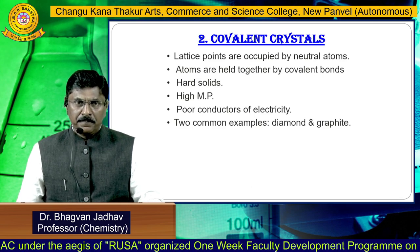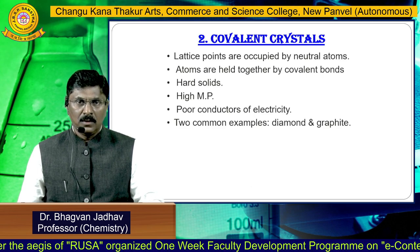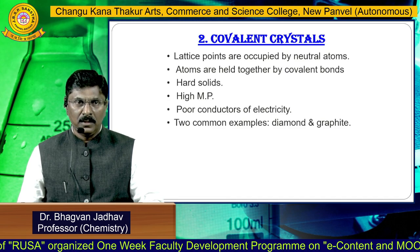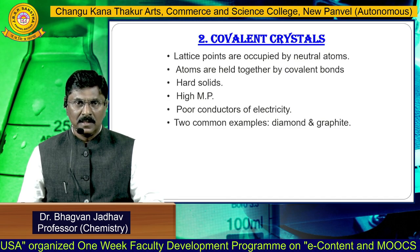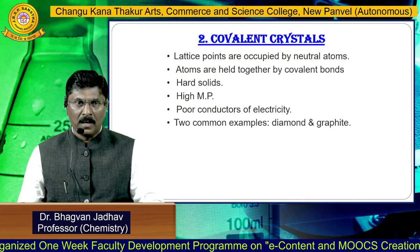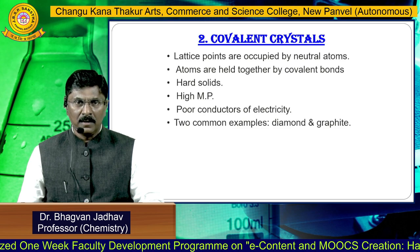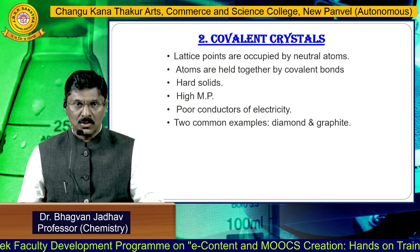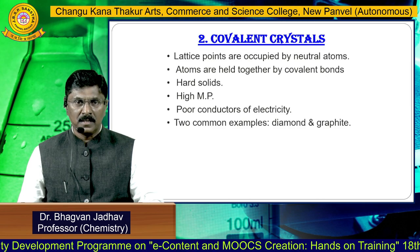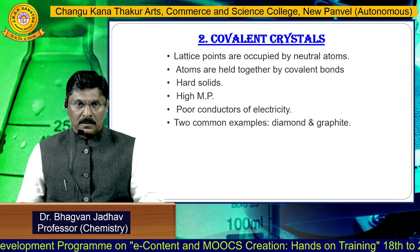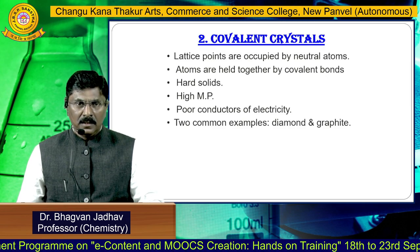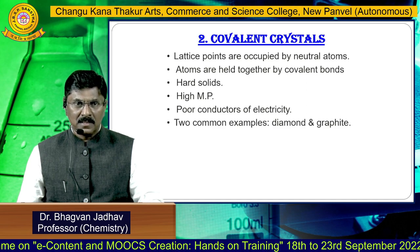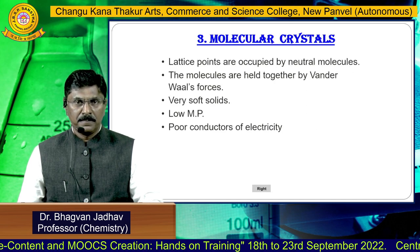The second type is the covalent crystals. In covalent crystals, the lattice points are occupied by neutral atoms, and these atoms are held together by covalent bonds. Covalent crystals are hard solids. They have high melting points. They are poor conductors of electricity, and the most common examples are diamond and graphite.